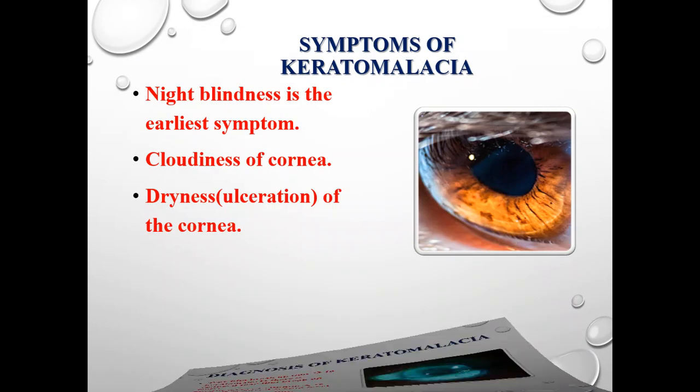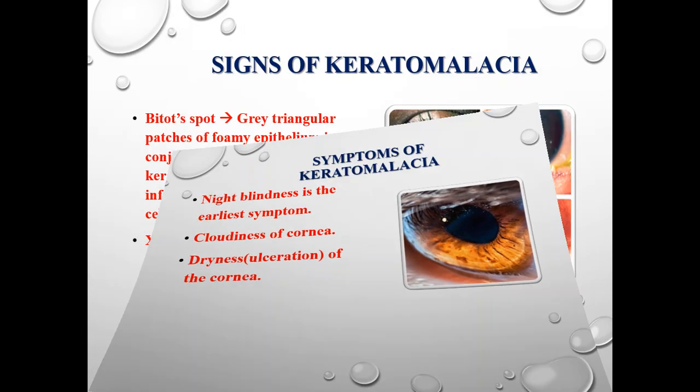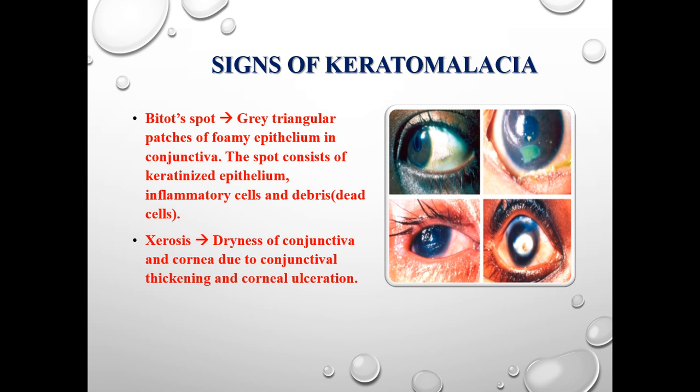The main symptoms of keratomalacia are night blindness, cloudiness, and ulceration of the cornea. Major signs that may be noticed in the disease are Bitot's spots and xerosis. Both of these signs are due to keratinization of the cornea and conjunctiva. Bitot's spots are keratinized patches that appear in the conjunctiva due to severity of the condition.